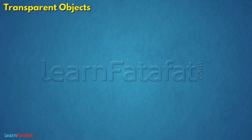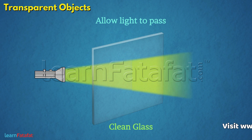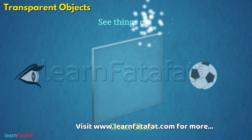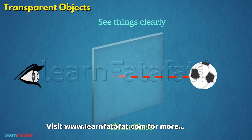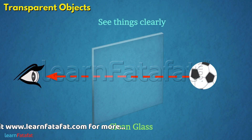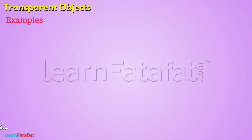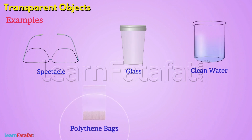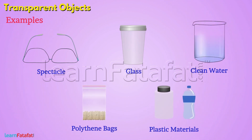Some objects such as clean glass allow light to pass through them completely, because of which we can see things clearly through them. These objects are called transparent objects. For example: spectacles, glass, clean water, some polythene bags, plastic materials, etc.